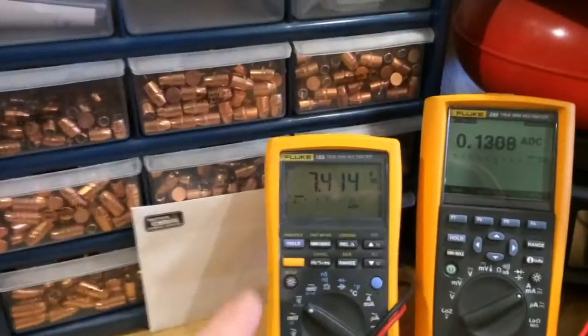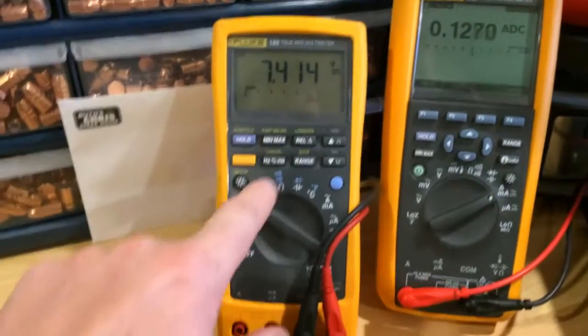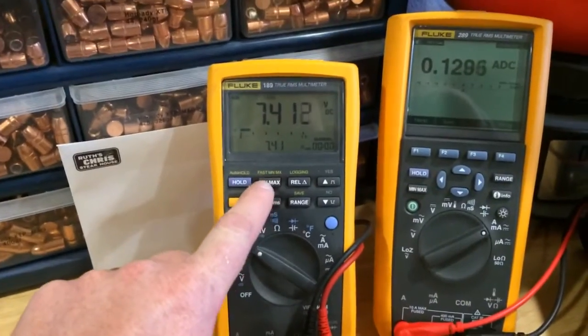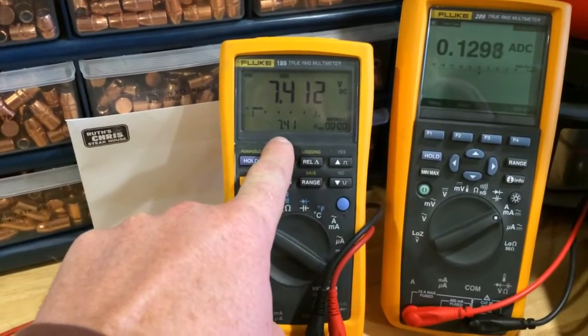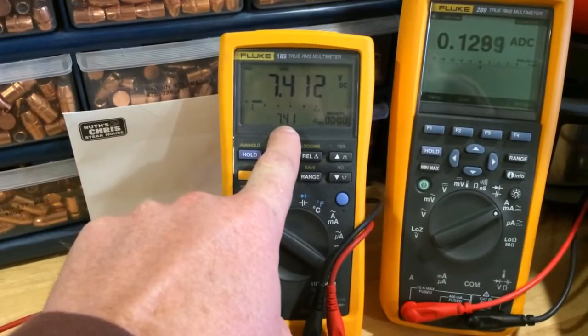So as I said, here we're watching our voltage, 7.14 volts. So I'm going to see the minimum max up. So now we're watching the minimum voltage will be displayed here. And the real-time voltage is displayed here.